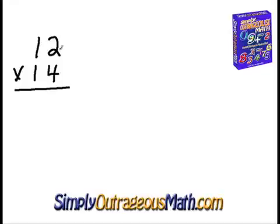So first we're going to take 2 times 4 equals 8. Then we're going to cross. So we're going to multiply 1 times 4 is 4, and then we're going to cross and multiply 1 times 2 and add that, and that will be 2. So our middle is going to be 6. Then we multiply 1 times 1 is 1. So our answer is 168.